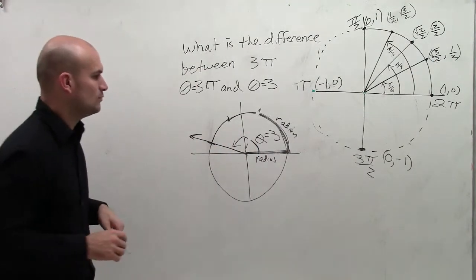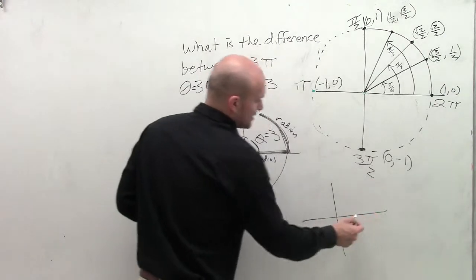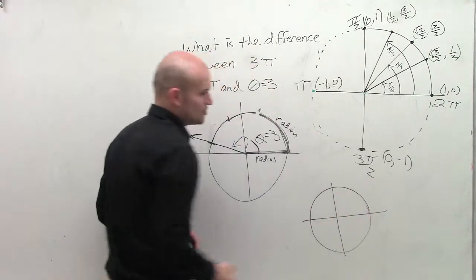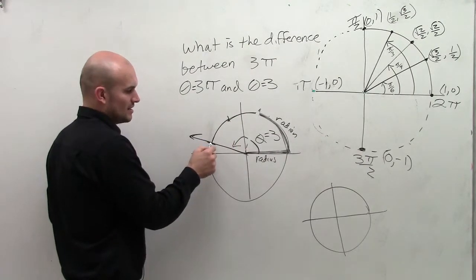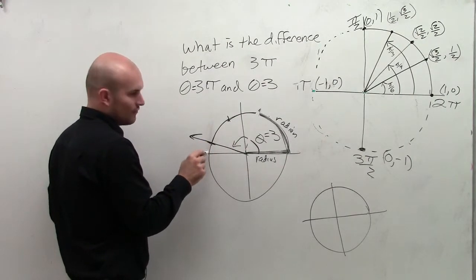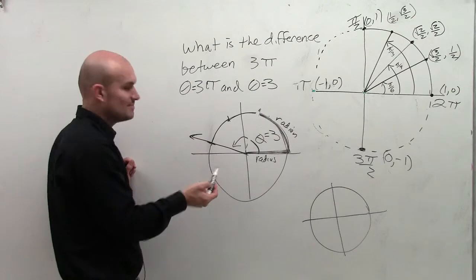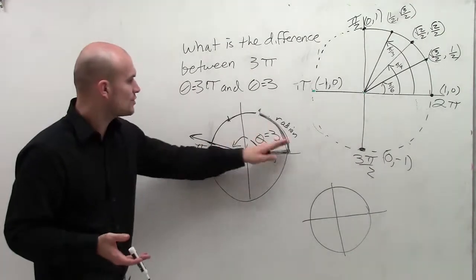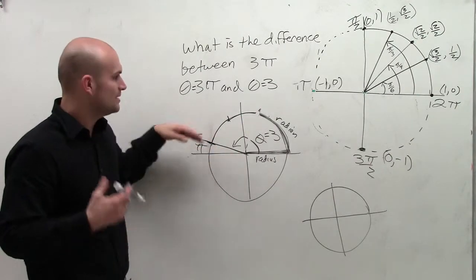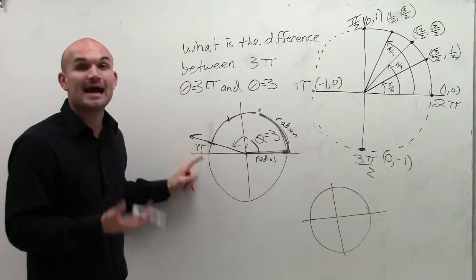Now, when theta equals 3π is going to be a little bit different. Because same thing, I'll draw a similar triangle. Remember, if here's 1 radian, 2 radians, 3 radians, well, right here is not going to be 4 radians. This is going to be an approximation. And that approximation was actually where we get the number π, because it takes π radians to make half of a circle.